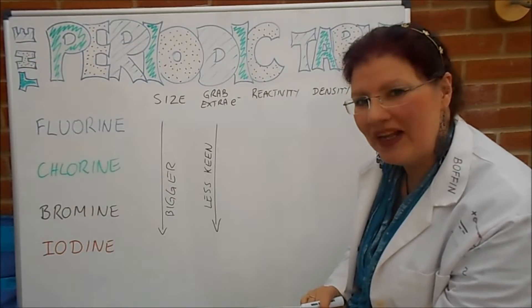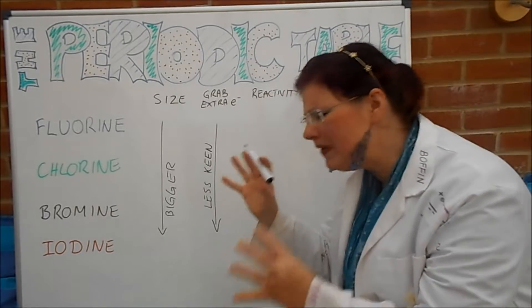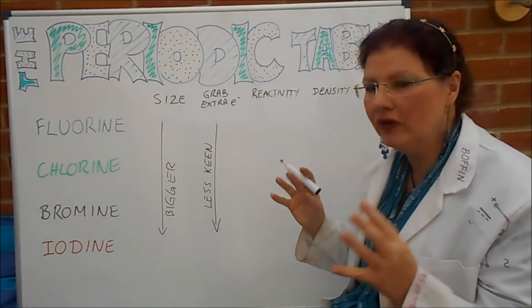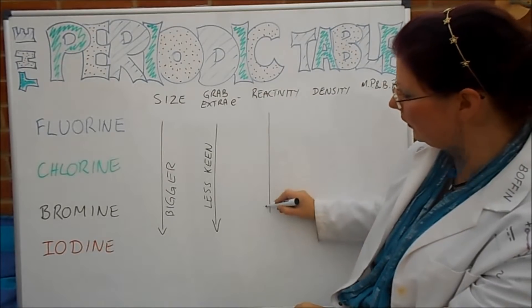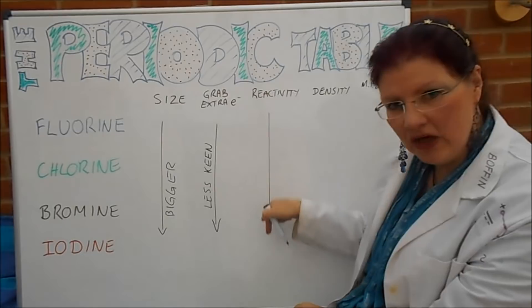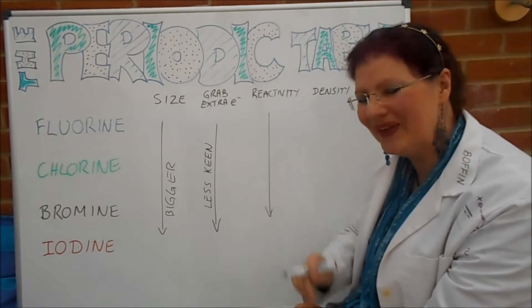So this tells you a lot about the next one. Since we know that fluorine is uber keen to grab spare electrons, what does this tell you about the reactivity? As we go down the group, does the reactivity increase or does the reactivity decrease? Fill that one in.